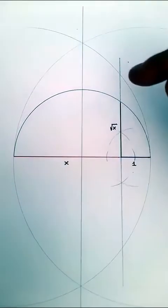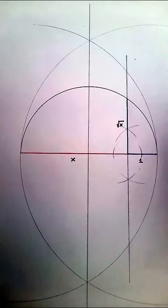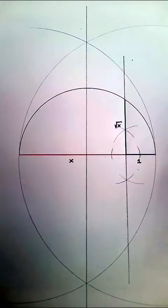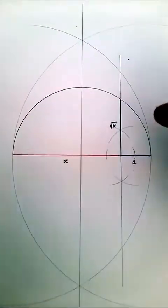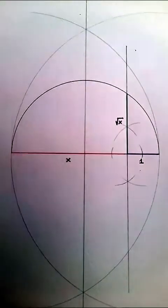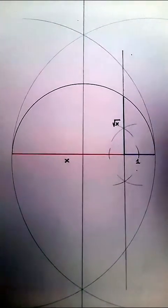Now this line going up which intersects with the semicircle and starts from the line x plus 1 is going to have the length root x. And I'm going to show you algebraically why this is the case.